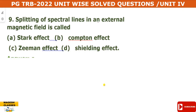The next question: the splitting of spectral lines in an external magnetic field is called what? In Bohr's concept, when an electron jumps from one energy level to another, we get the spectrum. When the spectrum is placed in a magnetic field, the spectral lines split into different lines due to energy differences.